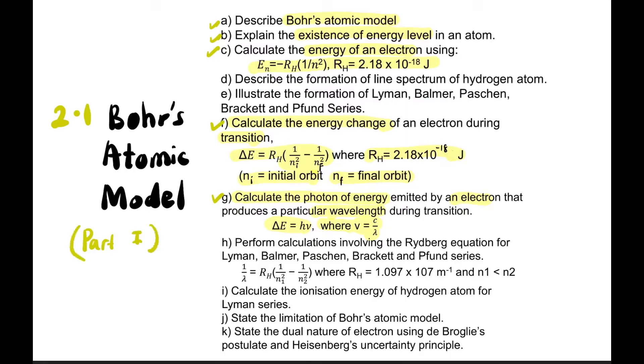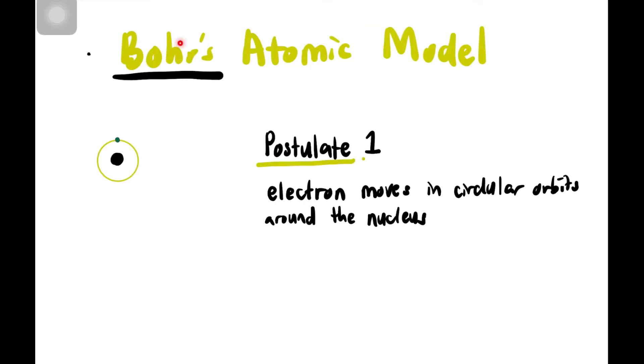Let's start with Bohr's atomic model. Bohr's atomic model was proposed by Niels Bohr, a Danish physicist, where he had four postulates. The first postulate is that in the center there is a nucleus, and electrons always move in circular orbits around the nucleus.